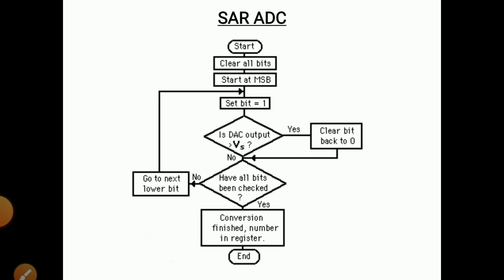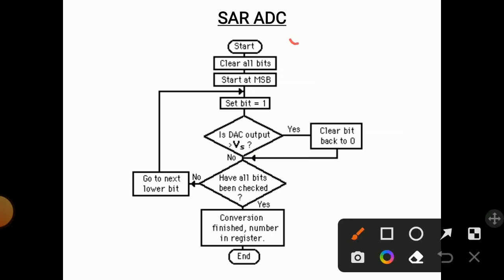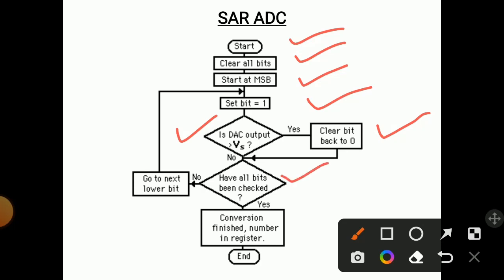A flowchart of the process is given. Start: clear all bits and start at MSB. Set bit equal to 1. If the DAC voltage is greater than Vs, clear that bit back to 0. If not, check whether all bits have been tested — if no, go to the next lower bit; if yes, conversion is finished and the number in the register is the final answer.